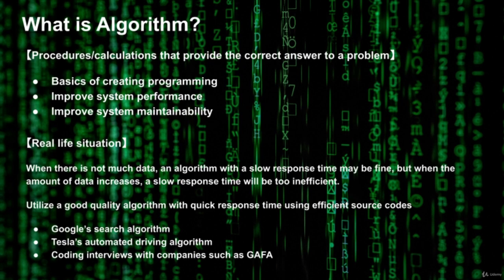It's especially important to have good algorithms for projects such as Google's search function and Tesla's automated driving. Good algorithms may be the reason why we're able to live in such a fast-paced, high-tech world. Even a couple of seconds faster in processing time becomes important. If you don't have knowledge of algorithms, you won't be able to write code that achieves this. That's why candidates interviewing at GAFA — which stands for Google, Apple, Facebook, Amazon — always go through a coding interview. If you want to work as an engineer, especially in Silicon Valley, it's important to be able to answer coding questions.